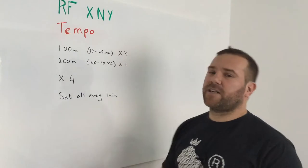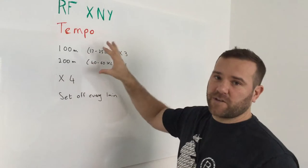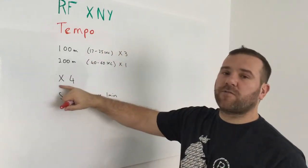These two together is one set, so it's 300 metres plus 200—that's 500 metres per set. We're going to do four of those sets.